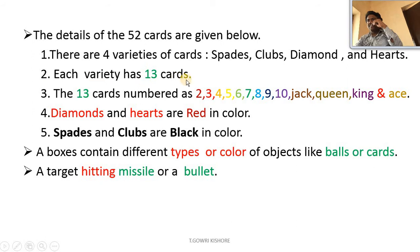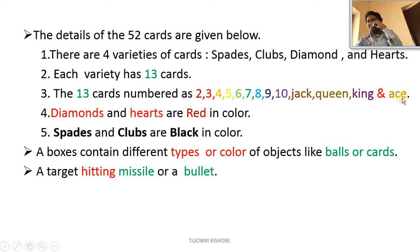Each variety has 13 cards — spades has 13, clubs has 13, diamonds has 13, and hearts has 13. These 13 cards are numbered as two, three, four, five, six, seven, eight, nine, ten, jack, queen, king, and ace. Diamonds and hearts are red in color; spades and clubs are black in color.